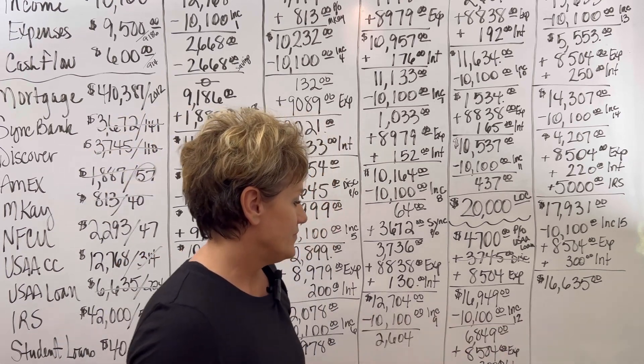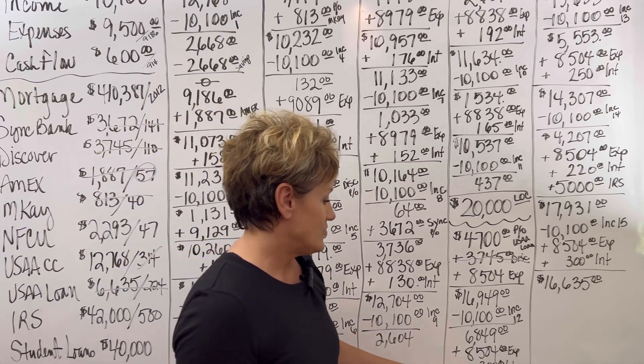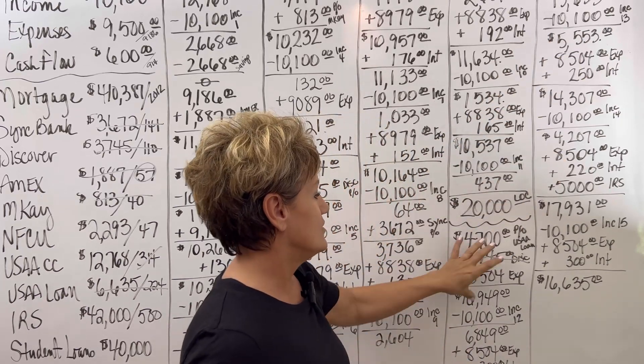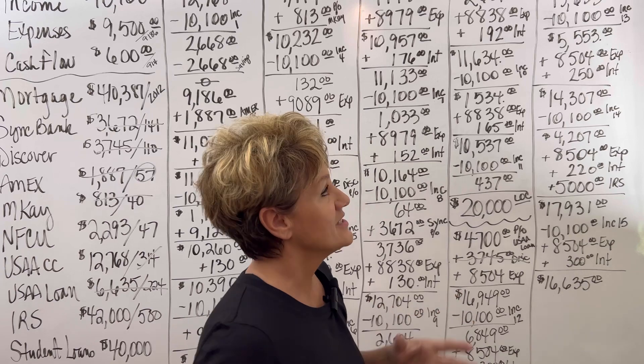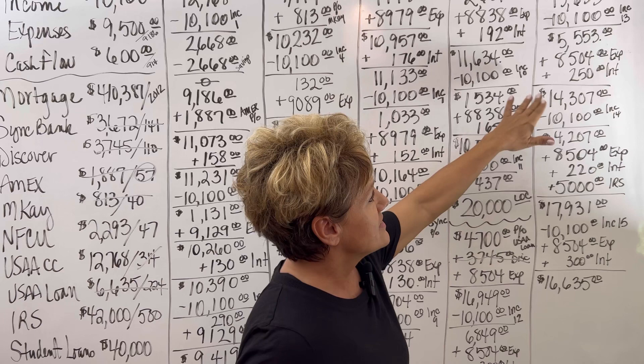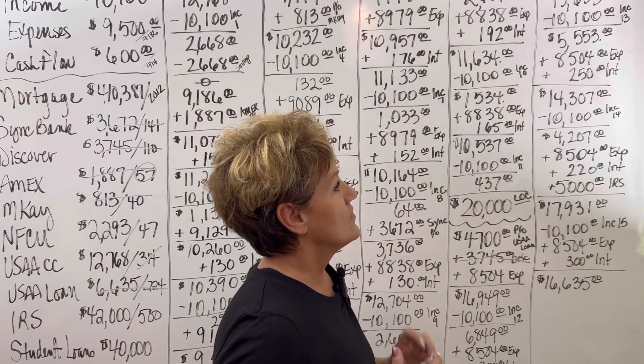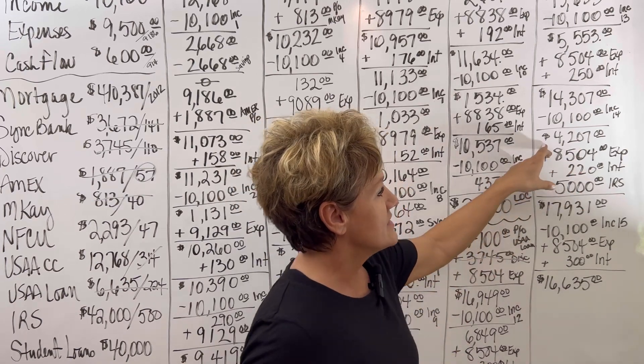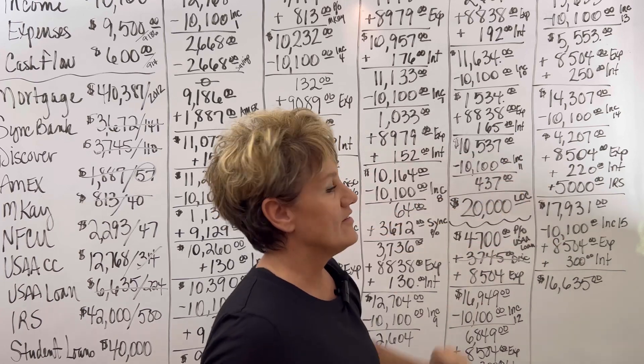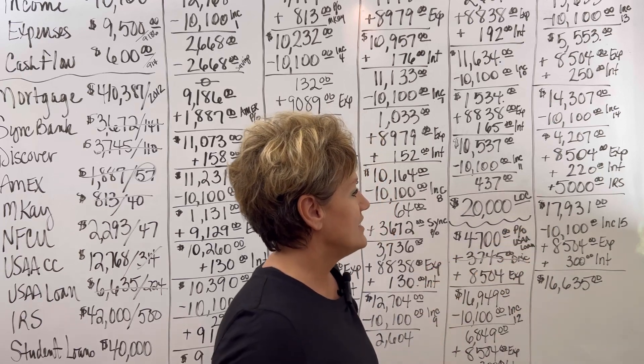Month 12, the income will go in, bringing the balance down to $6,849. The expenses and interest will come out through the month, bringing the balance to about $15,000, $16,000, depending on due to this now where I made that mistake. The balance would be at $5,553. The expenses and interest would come back out, bringing the balance back up to $14,307. Month 14, the income goes in, bringing the balance down. We'd add in the expenses, the interest, and look here, $5,000 to the IRS. So that brings our balance back up to $17,931.